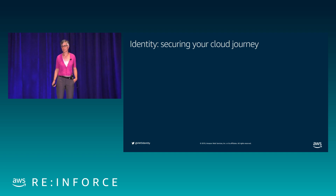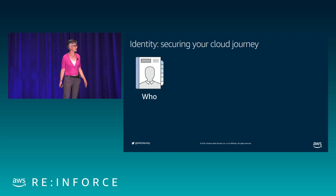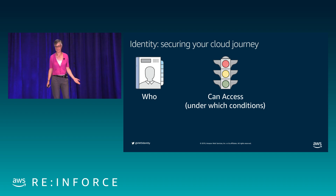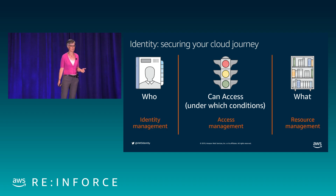What we're going to talk about today are the choices that you make as you answer the fundamental question of identity governance: who can access what under what conditions? You start with the who — these are the identities you're trying to manage. Then you apply the access policies that define what those identities can do, and then you define the resources to which they can apply those actions. We use this to think about the pillars of products we offer: products that let you manage identities, access, and resources.